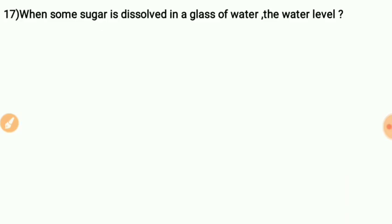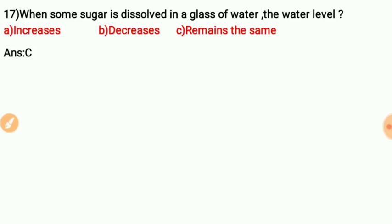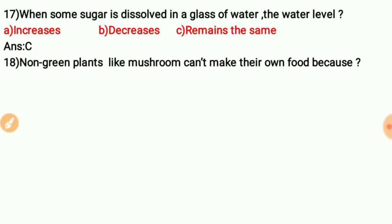Question sixteen: When some sugar is dissolved in a glass of water, the water level — what happens? The water level remains the same. Question seventeen: Non-green plants like mushroom cannot make their own food because they lack chlorophyll.